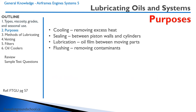Oil has four purposes. It is intended to cool the aircraft by removing excess heat — there's also an oil cooler that helps with this. It seals between the piston walls and cylinders. It lubricates by creating an oil film between moving parts, preventing friction from wearing down the surfaces. And it's also responsible for flushing.